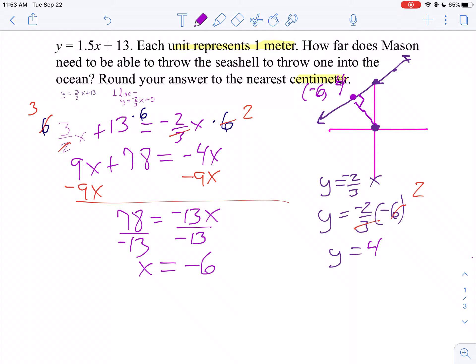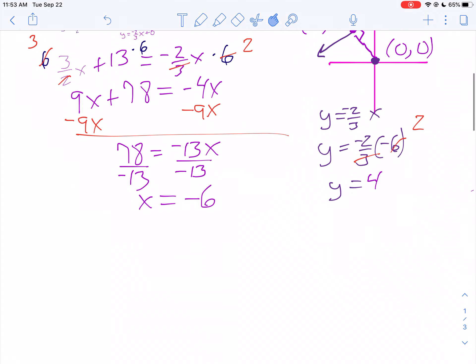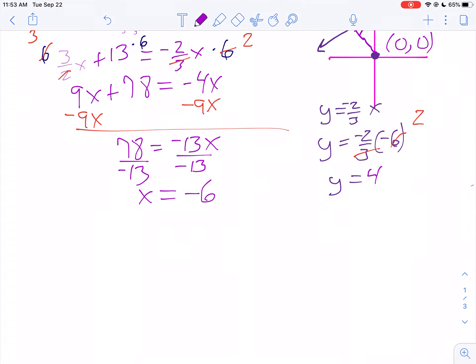I'm going to find the distance between 0, 0 and negative 6, 4. So we'll use the distance formula. When finding the distance between two points, first subtract the x's and square their values. Do the same thing for the y's and take their square root.